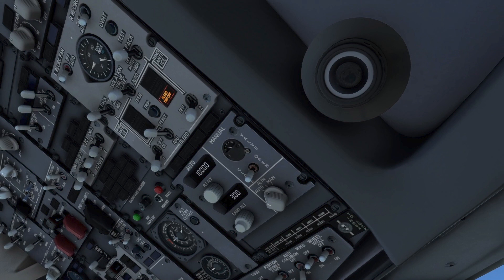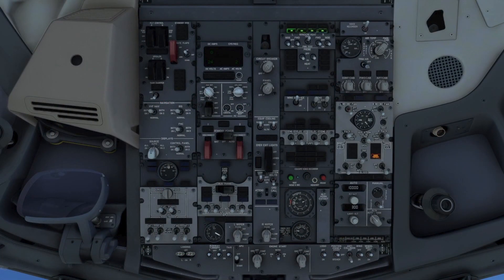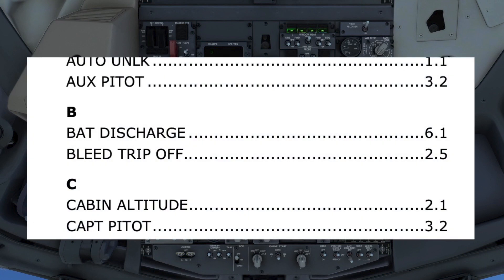If applicable, the QRC is checked for the procedure, followed by the Quick Reference Handbook or QRH. The bleed trip-off procedure is located in the QRH and found under B, with the wording shown on the illuminated light.